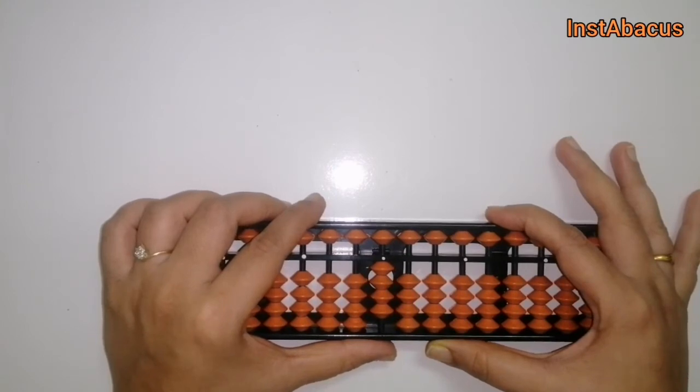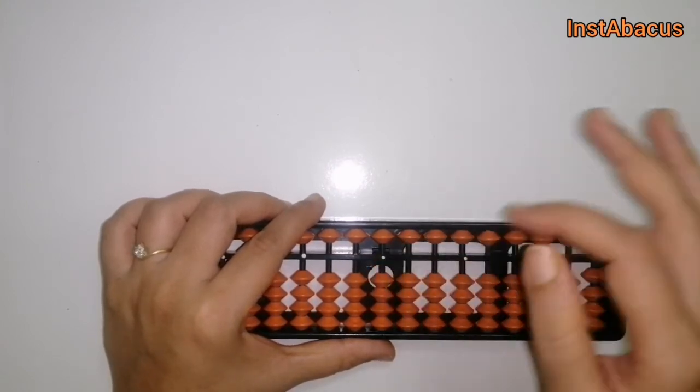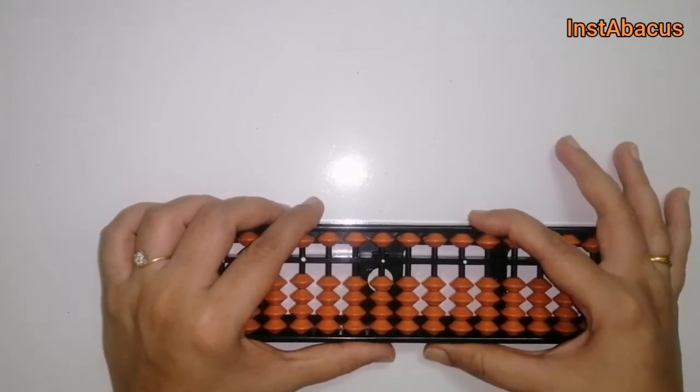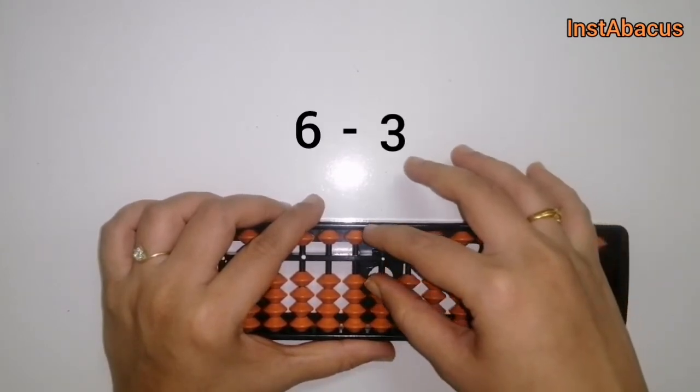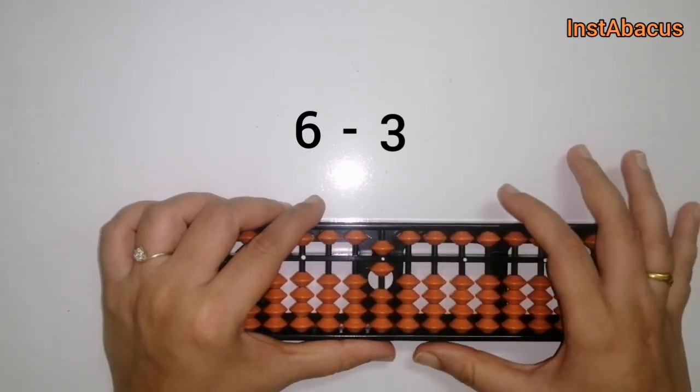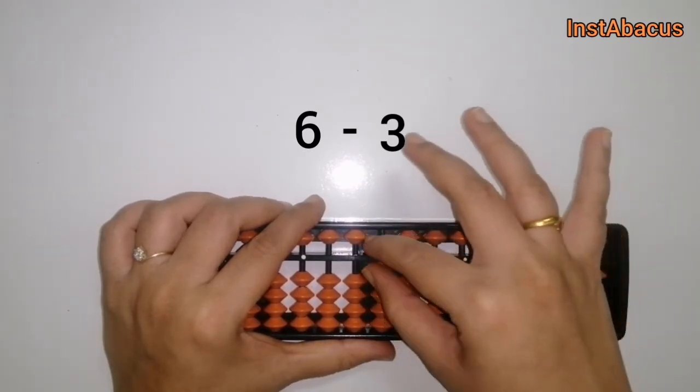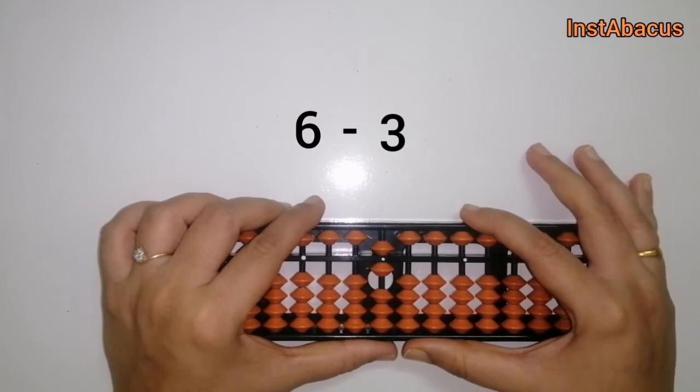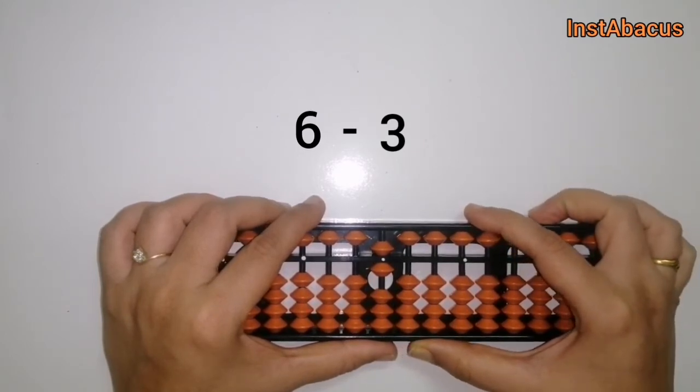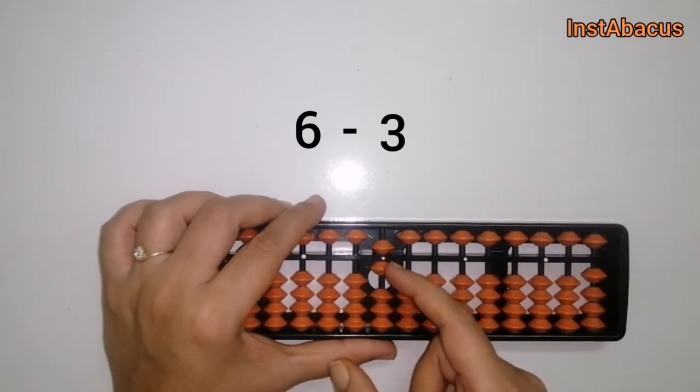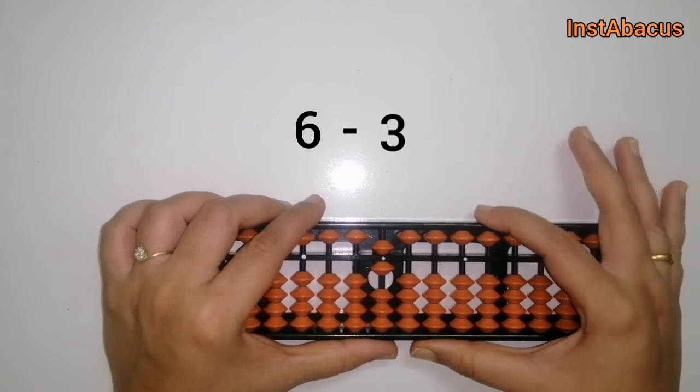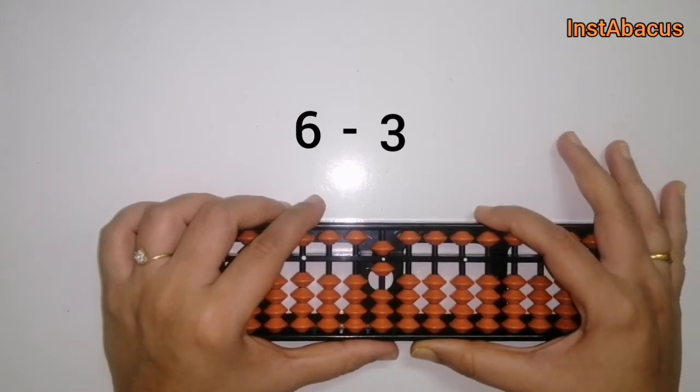Next one, 6 minus 3. This is 6 on our abacus and, oh, again we cannot subtract 3 directly, right? Why? Because we don't have 3 earthly bits here to move away from the answering bar, right?